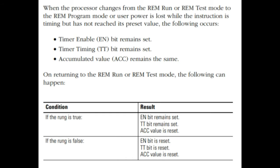On returning to the run or test mode, the following can happen. If the rung is true: EN bit remains set, TT bit remains set, accumulated value is reset. If the rung is false: EN bit is reset, TT bit is reset, ACC value is reset.